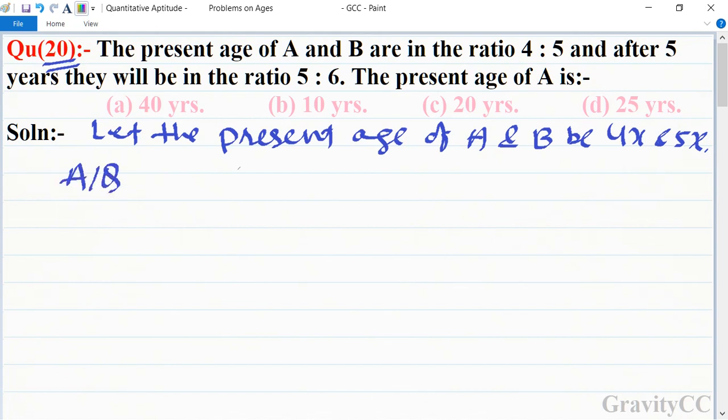the question, after 5 years their age will be 5:6. So (4x + 5)/(5x + 5) = 5/6.